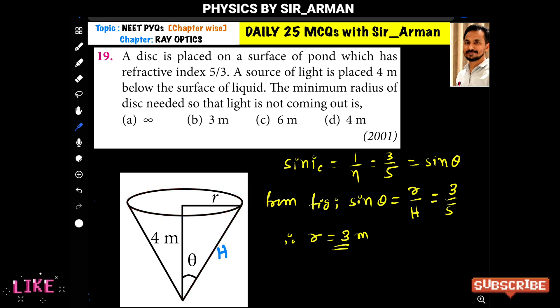And this is happening due to the total internal reflection. That is, when the light is allowed to incident at an angle greater than the critical angle, the ray will reflect back.